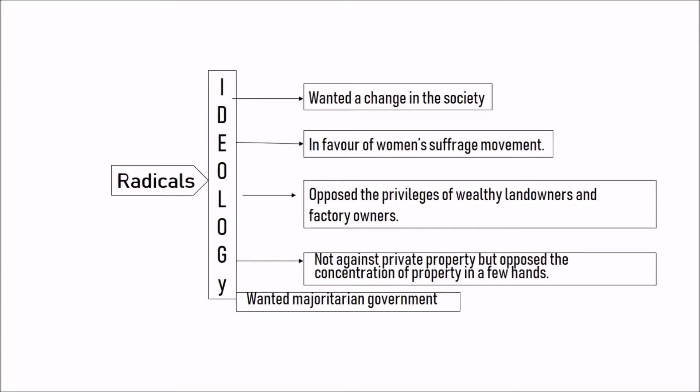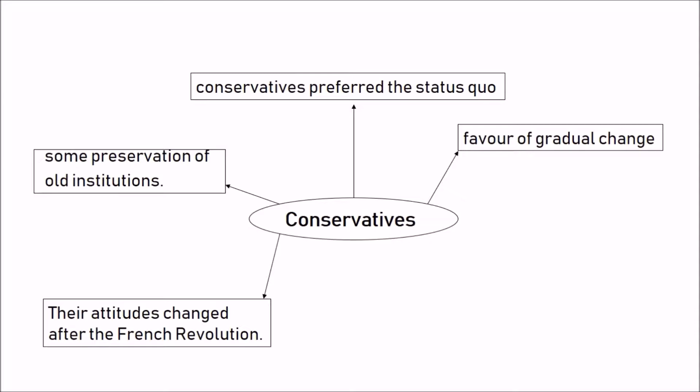Views of the Radicals: Radicals also wanted change in society. They wanted to support women's rights to vote and opposed the privileges of wealthy landowners and factory owners — they were against the concentration of wealth in the hands of few people. They were not against private property itself, but they believed in a majoritarian type of government, similar to a democratic government.